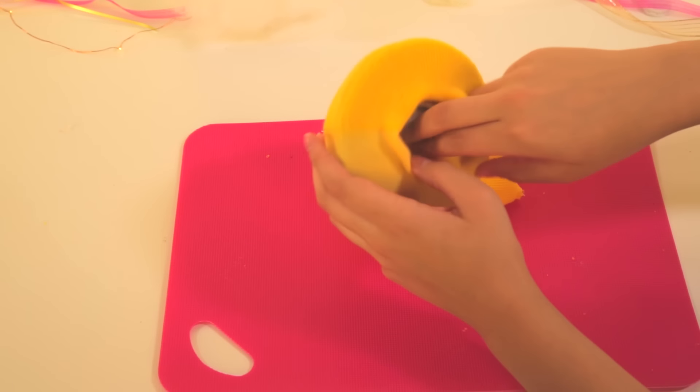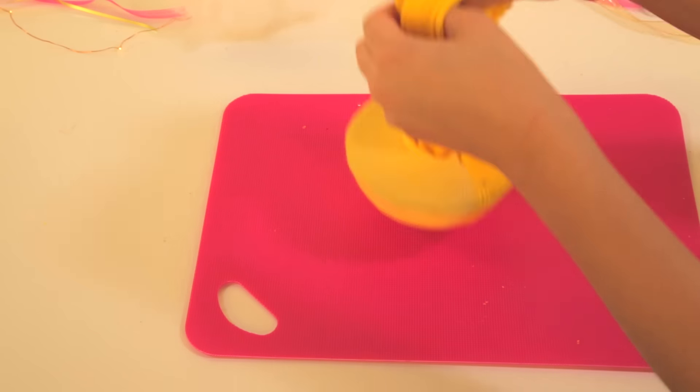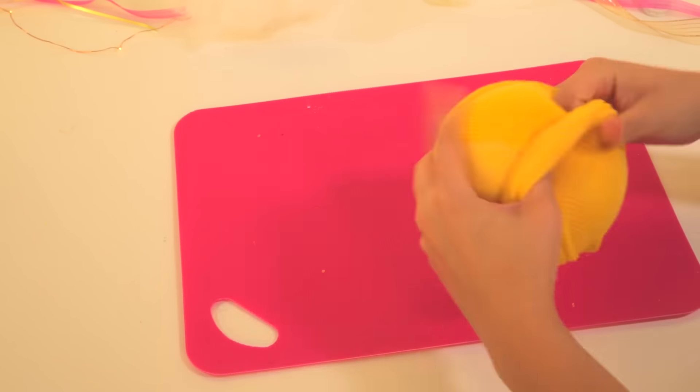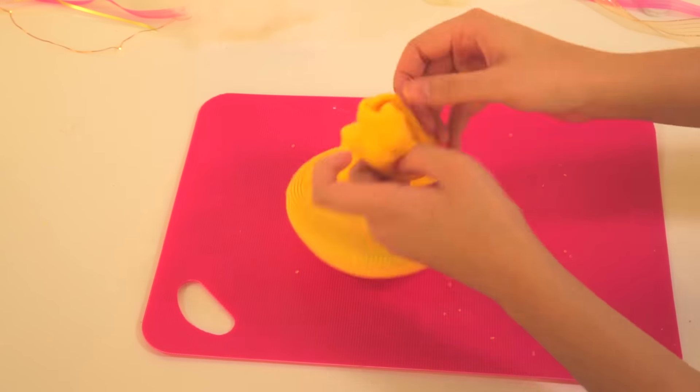Take the same end of the sock and push it into the hole in the center. Pull until it's tight. Open the sock and wrap it around the donut. Repeat until you are left with about an inch of the sock.